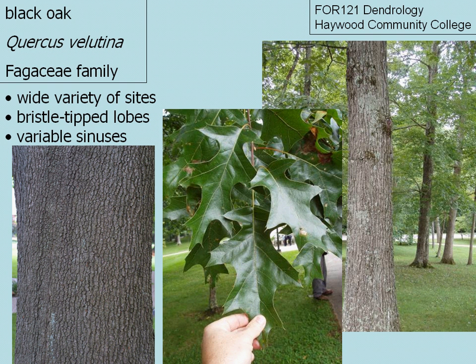Black oak. The scientific name is pronounced Quercus velutina. It's a member of the Fagaceae family, or the Beech family, and occurs on a wide variety of sites.